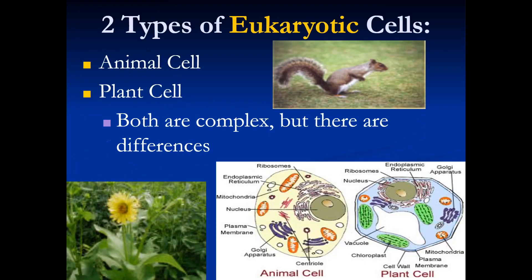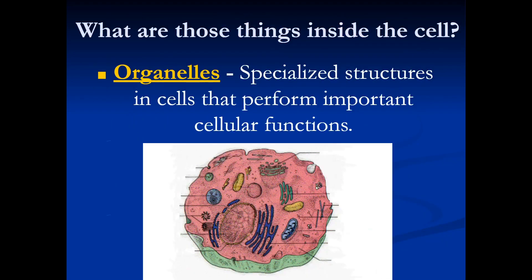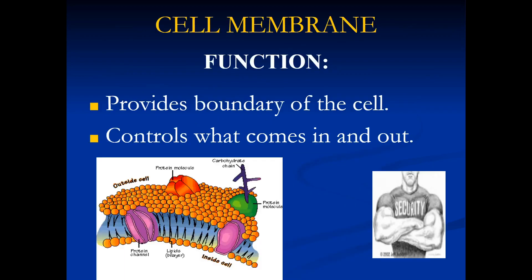There are two types of eukaryotic cells: plant cells and animal cells. Both are very complex but are also similar and different. Things inside the cell are called organelles, which are specialized structures in cells that perform important cellular functions — basically acting as organs for the cell.